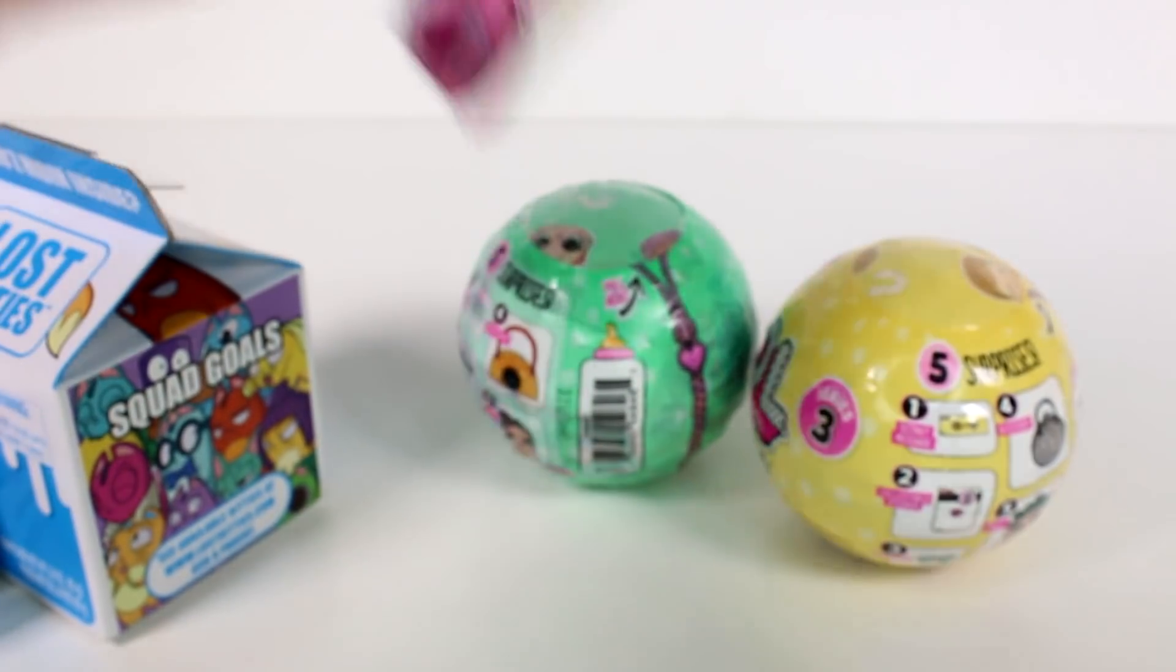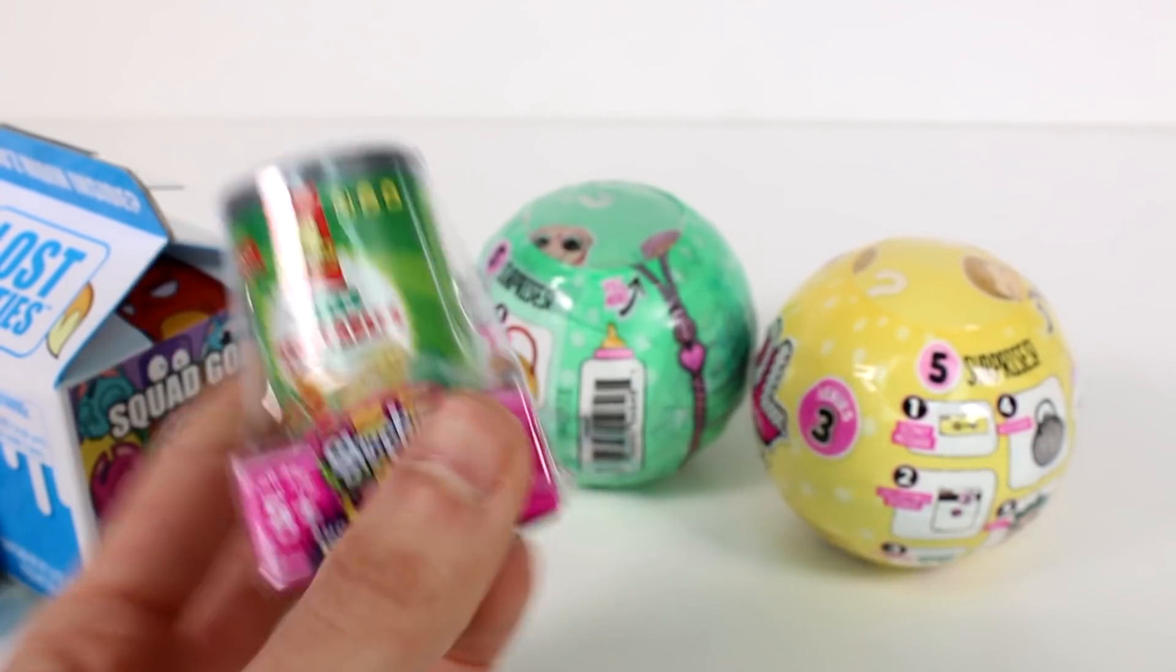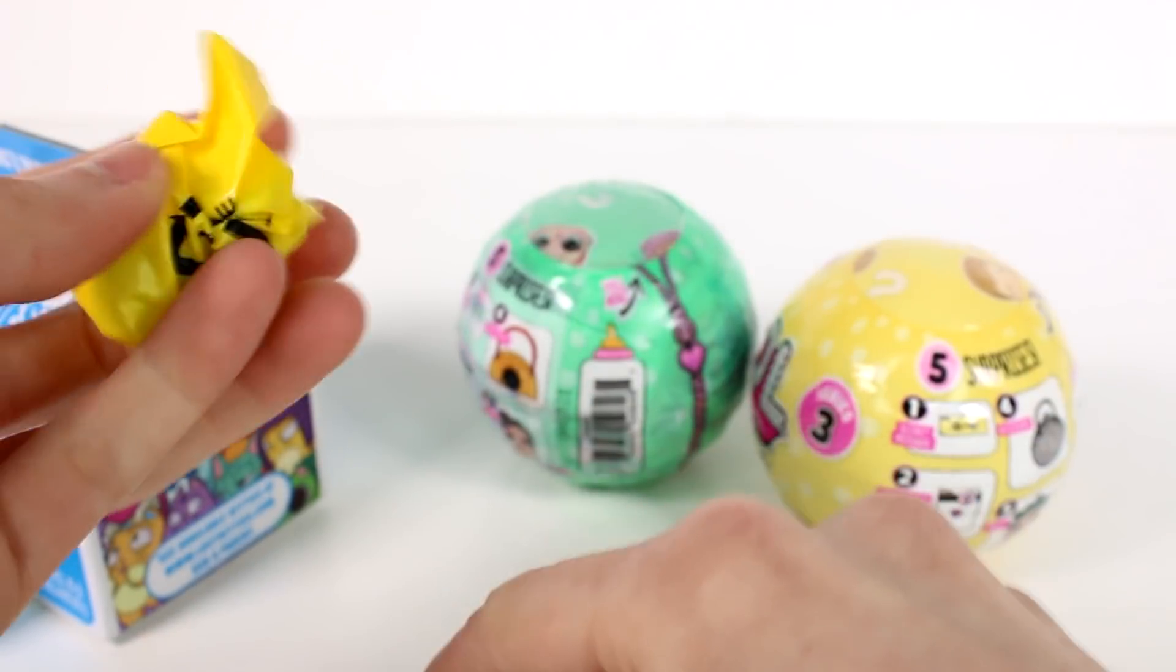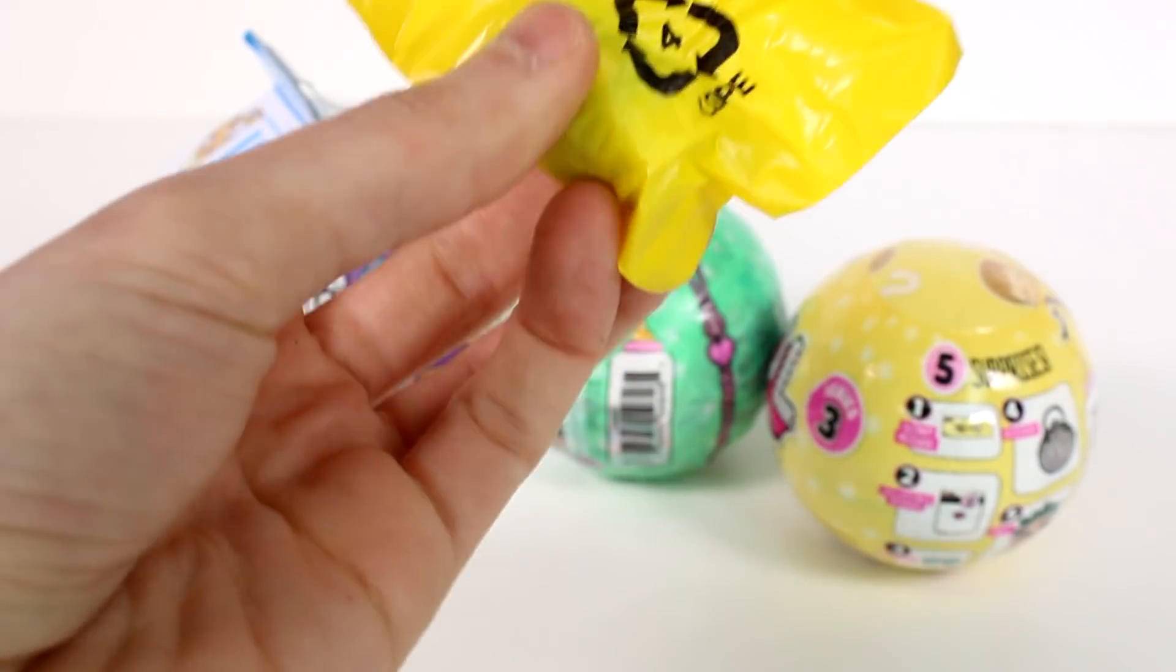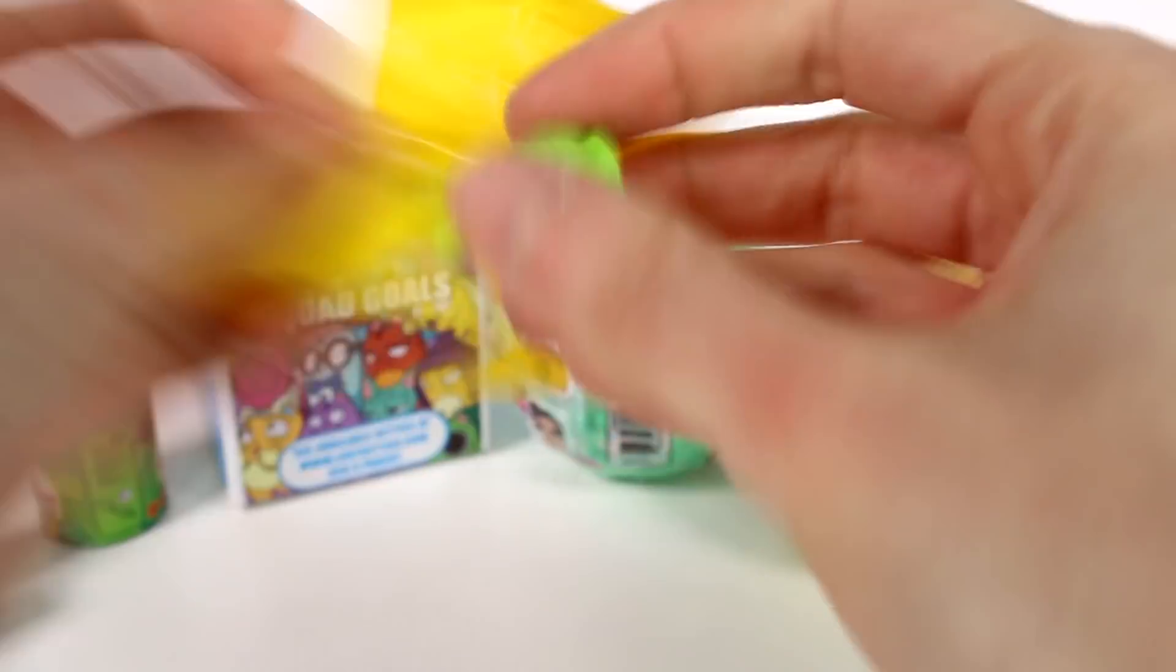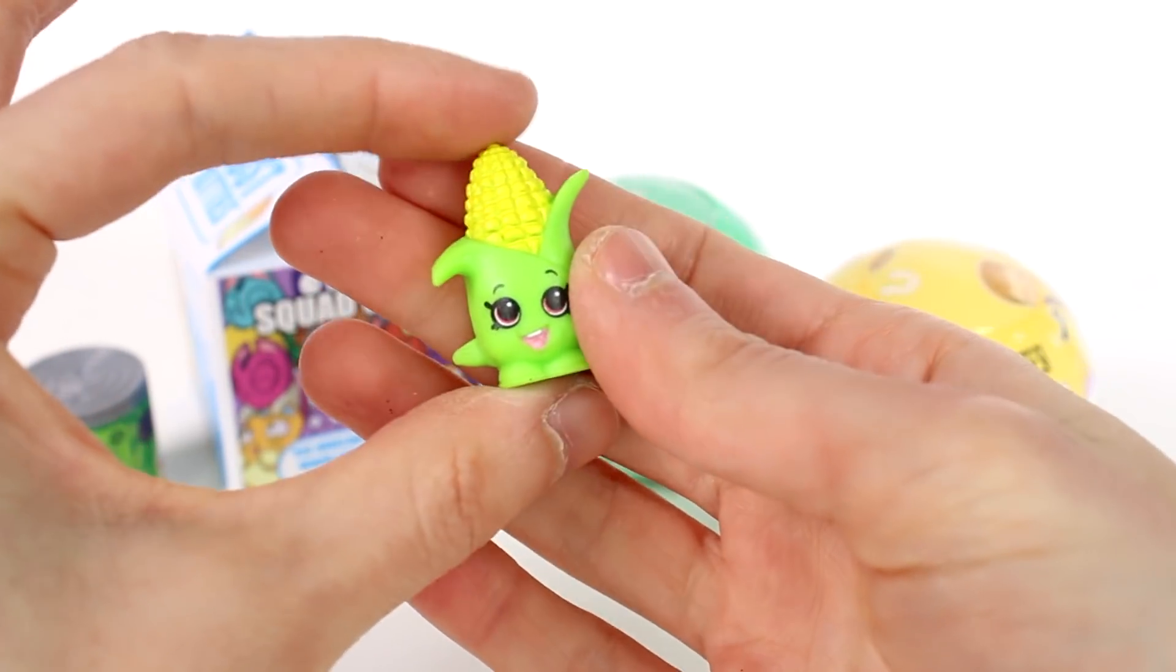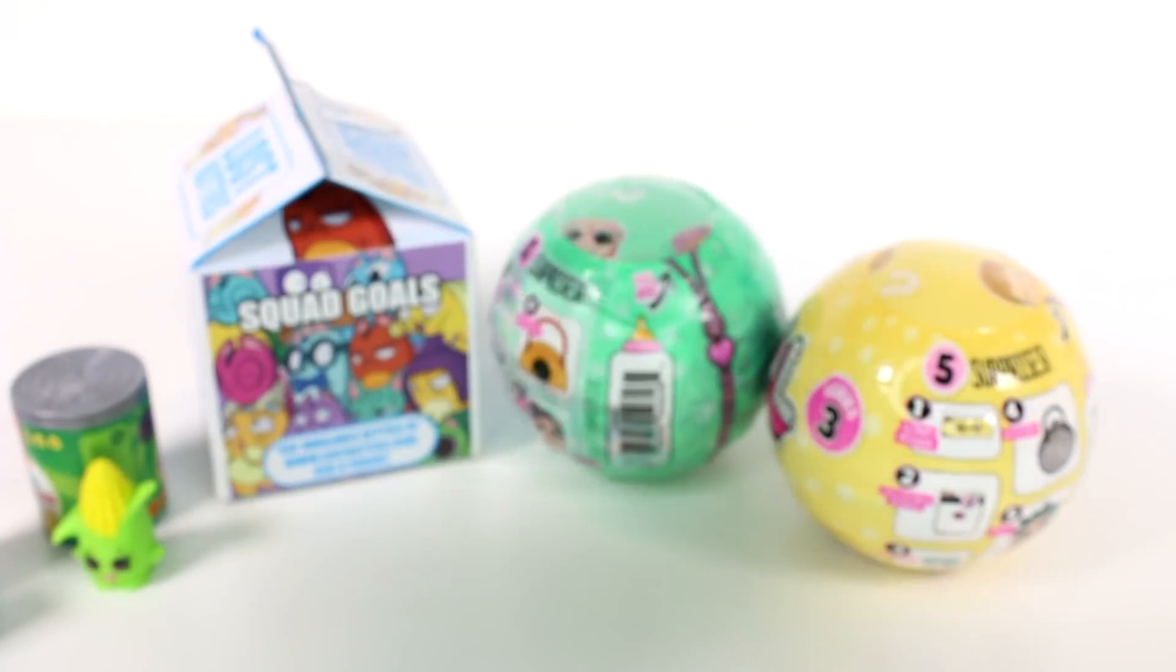And then since we're at it, let's open up the other Shopkins mini pack. We have the mixed vegetables. Got to have the vegetables. You're going to have all those ice creams. You got to have the vegetables. Let's see what it is. It's the Corn from Season 2. Yes. Oh my goodness. Love this one. This one's one of my favorite Shopkins and I just keep throwing it. It's fine.